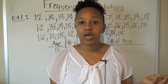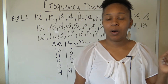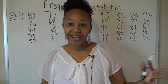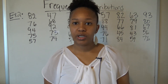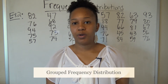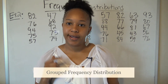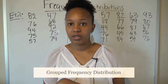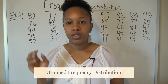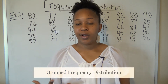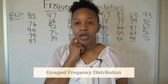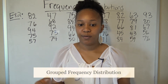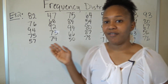Sometimes when you have really large amounts of data, instead of a regular frequency distribution you use what's called a grouped frequency distribution. Instead of individual numbers like 10, 11, 12, 13, you have a range of numbers — like 10 to 15, 16 to 20, 21 to 25, and so forth. It works the same way, except now you count a range of data points for each frequency category.